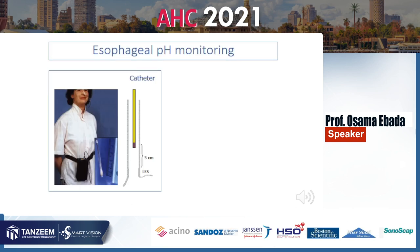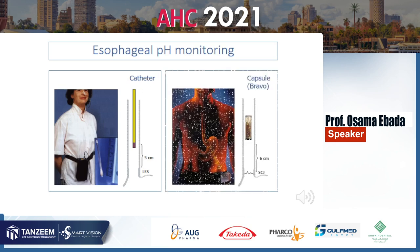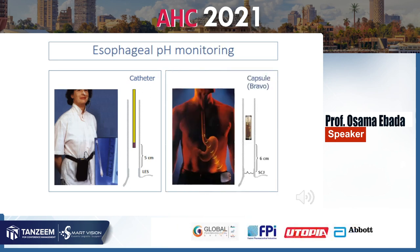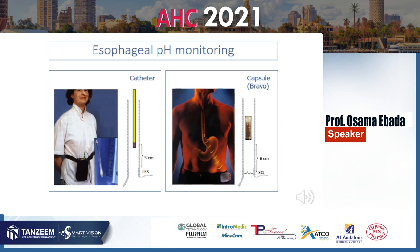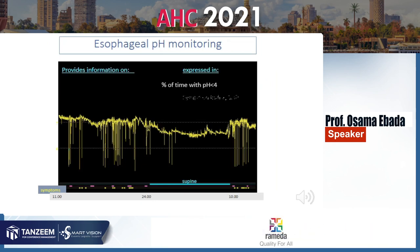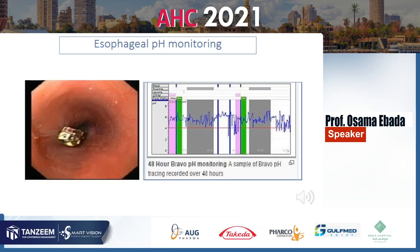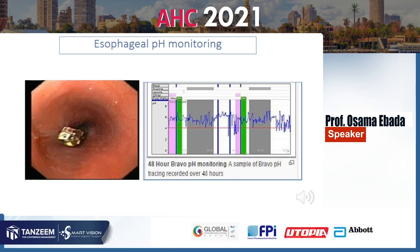Esophageal pH metry involves placing a catheter 5 cm above the LES to measure 24-hour pH, or attaching a Bravo capsule 6 cm above the gastroesophageal junction, which transmits data to an apparatus around the patient's belt. With pH metry, you measure what percent of time pH is less than 4 and whether symptoms are associated — giving a symptom index or symptom association probability.